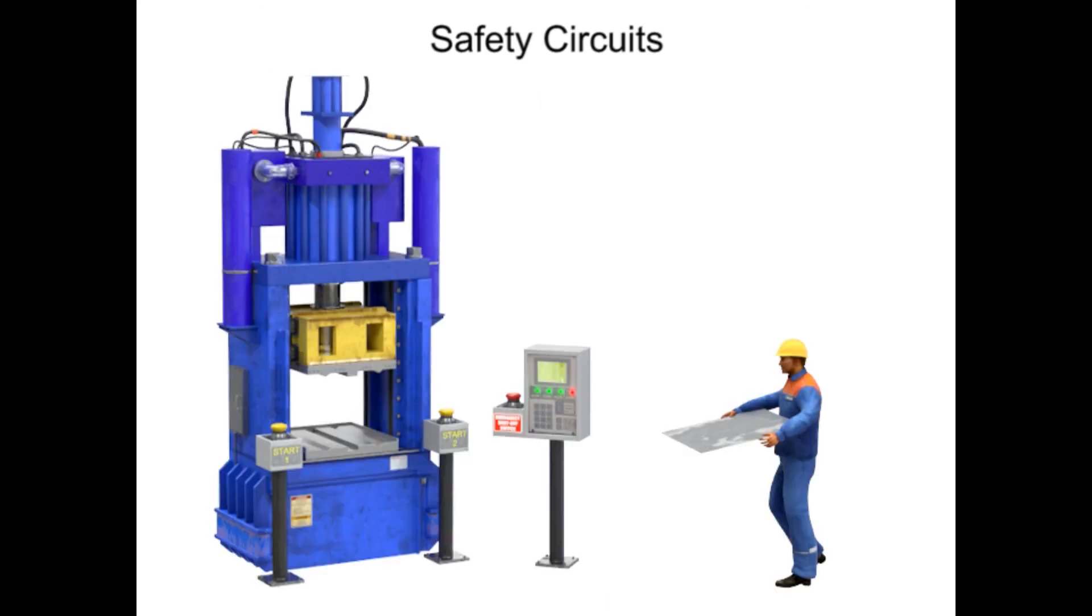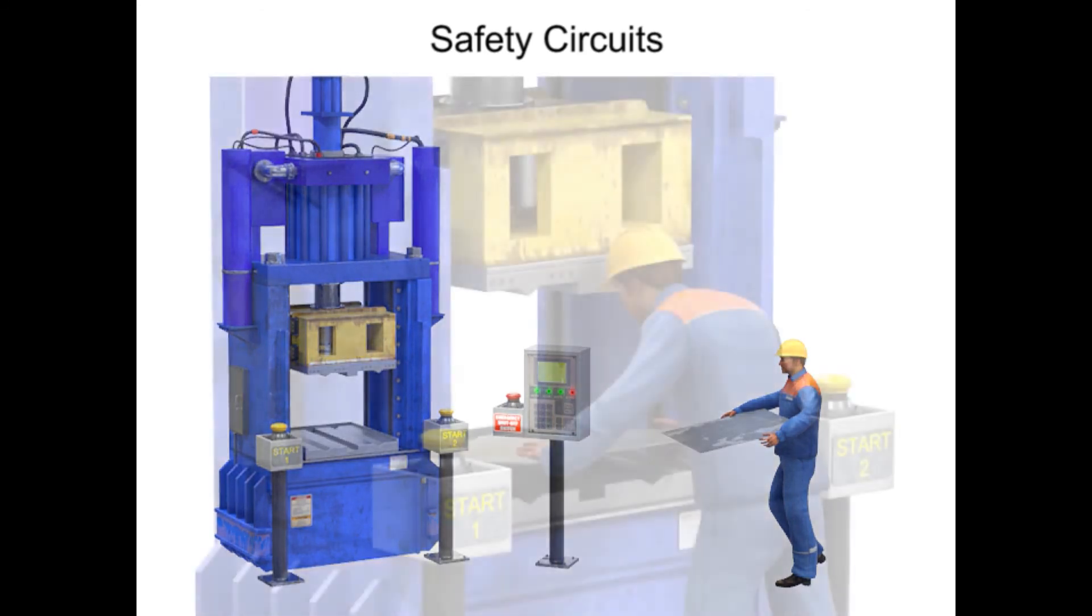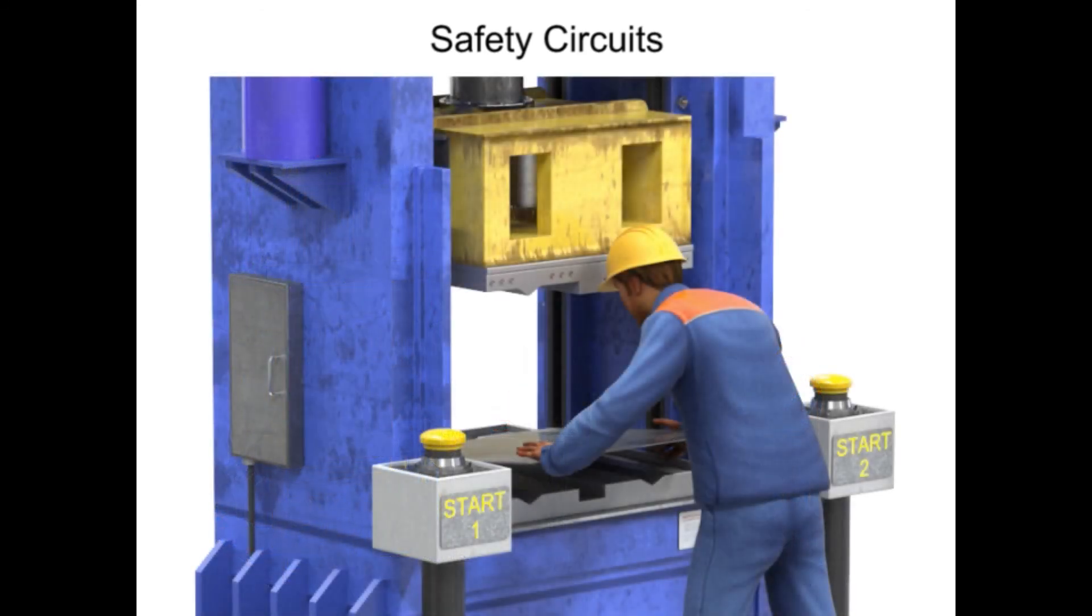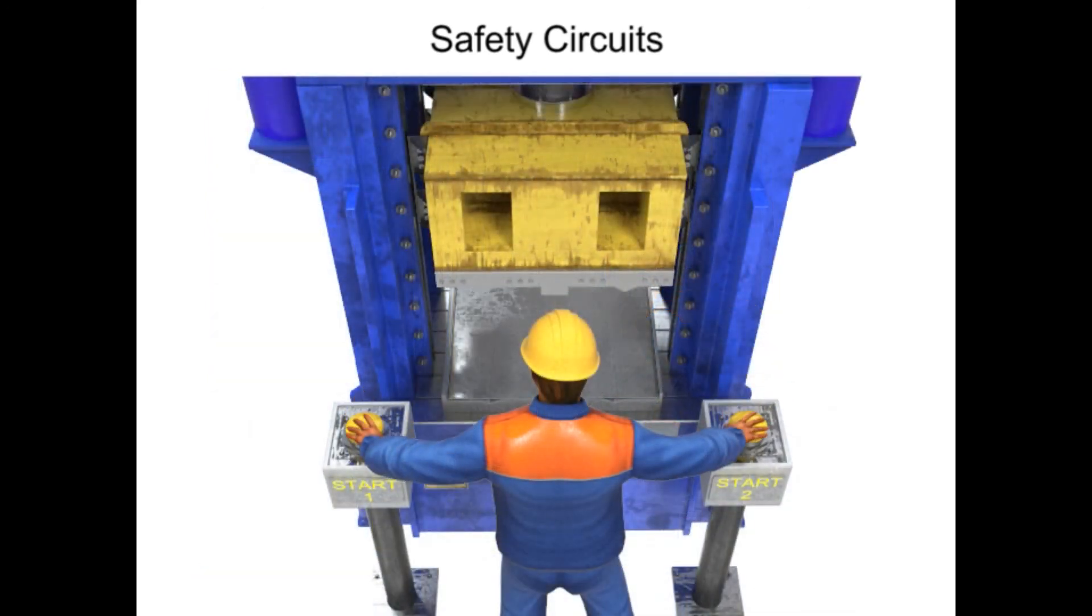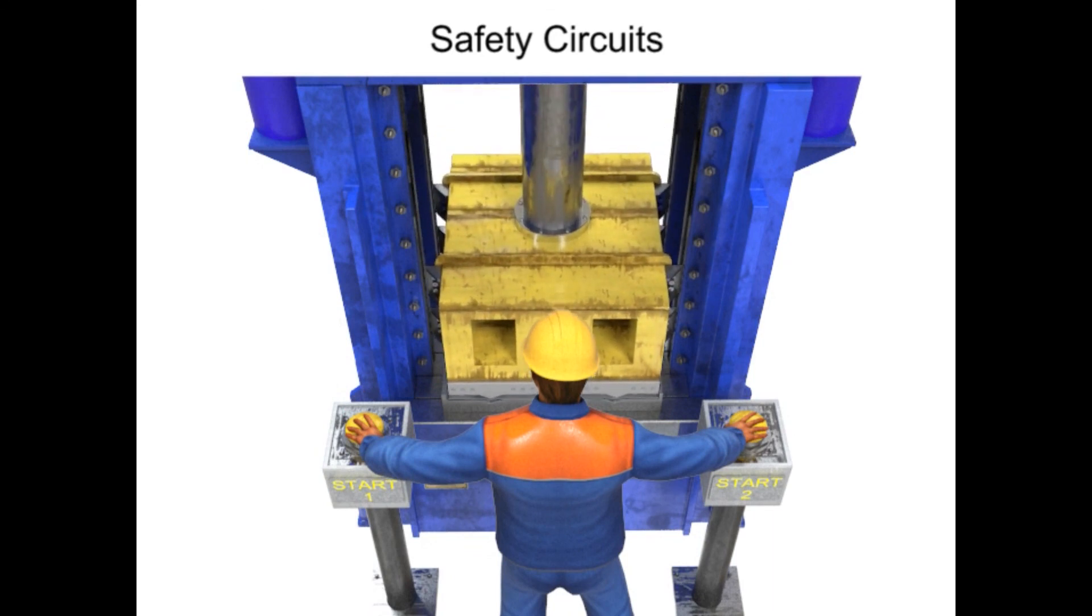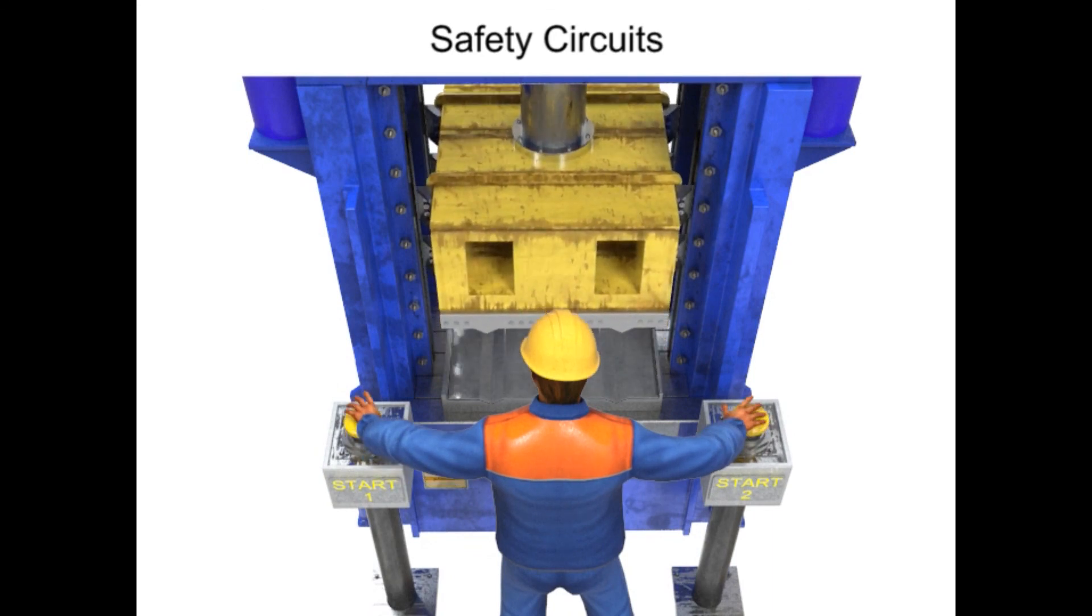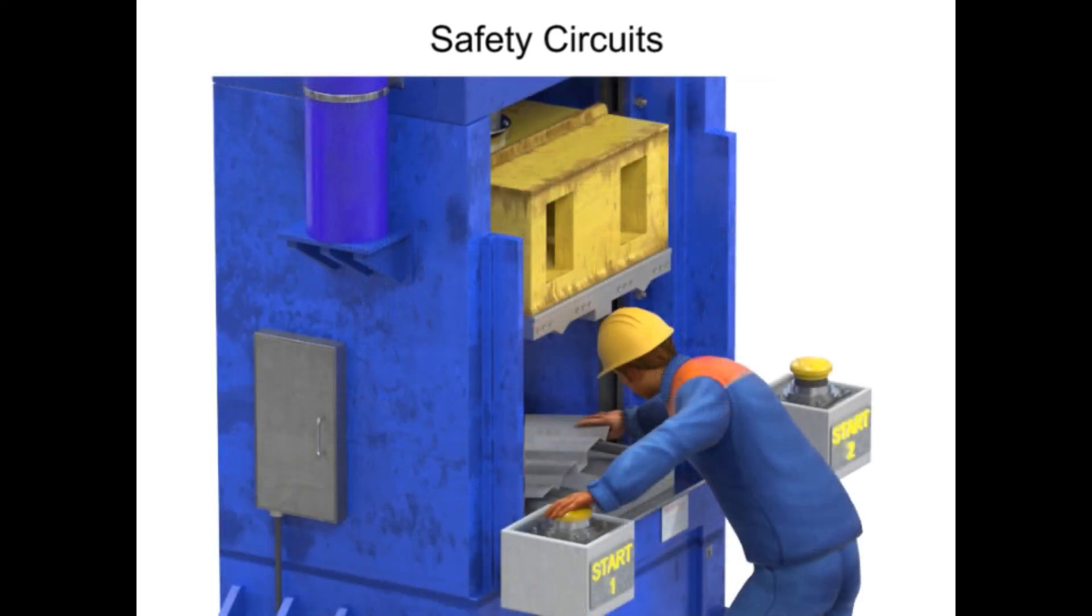In some manufacturing industries, such as those that produce castings from foundries, two-hand controls are mandated on specific equipment. It is the system design team's responsibility to select adequate means of operator protection. Two-hand controlled machinery is an easy and effective way to ensure safe operation of industrial equipment.